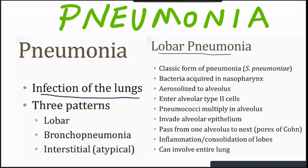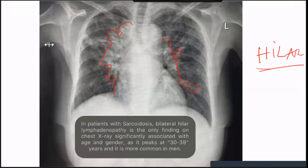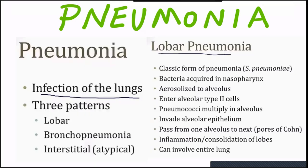Now we go to pneumonia. First, understand the difference between pneumonitis and pneumonia: pneumonitis is inflammation of the lung, while pneumonia is infection of the lung. There are three patterns: lobar pneumonia, bronchopneumonia, and interstitial pneumonia — the last is also called atypical. Treatment is different for typical and atypical pneumonia.